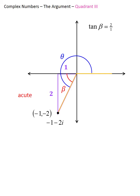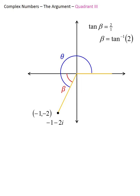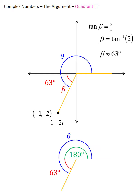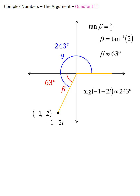To find beta, we set up a tangent equation using the y-coordinate and x-coordinate — but not the negative signs. Since beta is an acute angle, we apply the inverse tangent and round beta to 63 degrees. This picture shows that 180 plus 63 gives theta. Therefore theta equals 243 degrees, which is the argument of the complex number -1-2i.